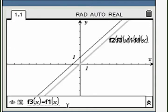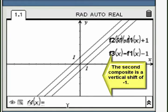Define function F3 in terms of F1 so that it results in a shift down by one.